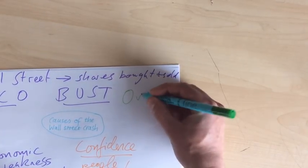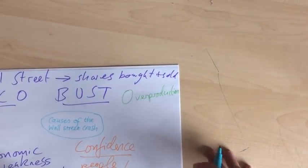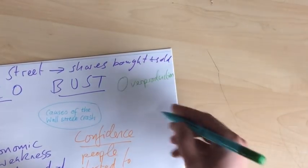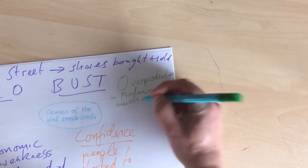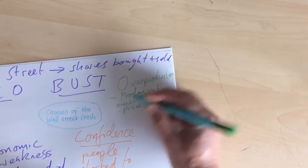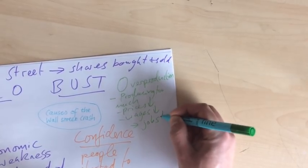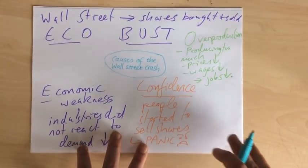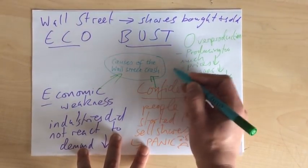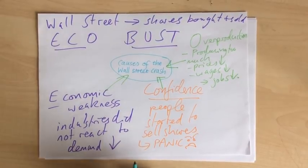The final one for this section is O — that's Overproduction. It's a really nice one if you get that in an exam because it simply means that companies are producing too much. So they have to put their prices down, they have to put their wages down as a result, and people lose their jobs, which all causes share prices to go down. Each one of these problems links to Wall Street because each one means people lose confidence in American companies and try to sell their shares, which causes the price of shares to crash.